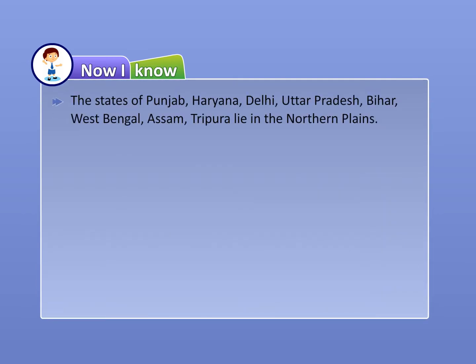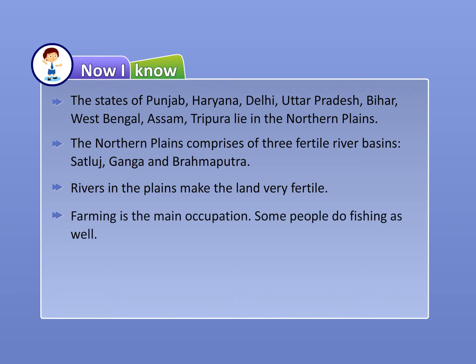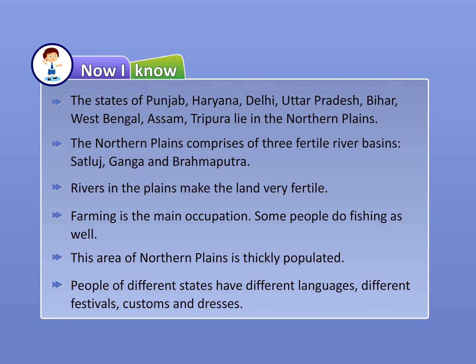Now I know: The states of Punjab, Haryana, Delhi, Uttar Pradesh, Bihar, West Bengal, Assam, and Tripura lie in the northern plains. The northern plains comprise three fertile river basins — Satlaj, Ganga, and Brahmaputra. Rivers in the plains make the land very fertile. Farming is the main occupation; some people do fishing as well. This area of the northern plains is thickly populated. People of different states have different languages, different festivals, customs, and dresses.